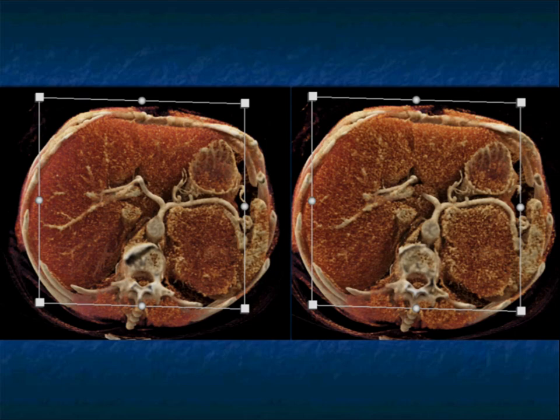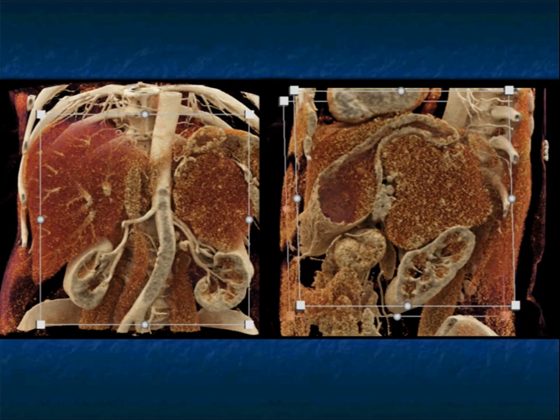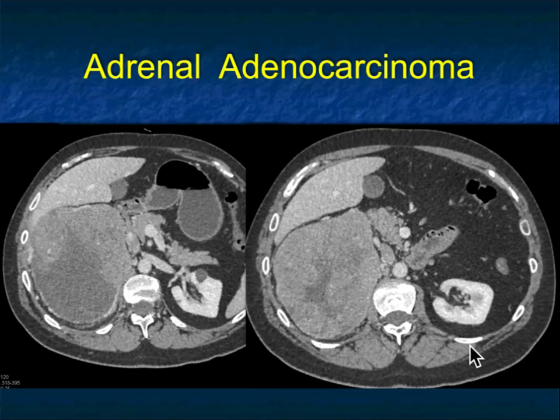Cinematic rendering nicely shows the mass, and the sagittal 3D shows it pushing on the stomach and the left kidney. Every once in a while a large left adrenal mass can be confused with a GIST tumor — I've seen a few GIST tumors called adrenal tumors at pancreas conference and vice versa.